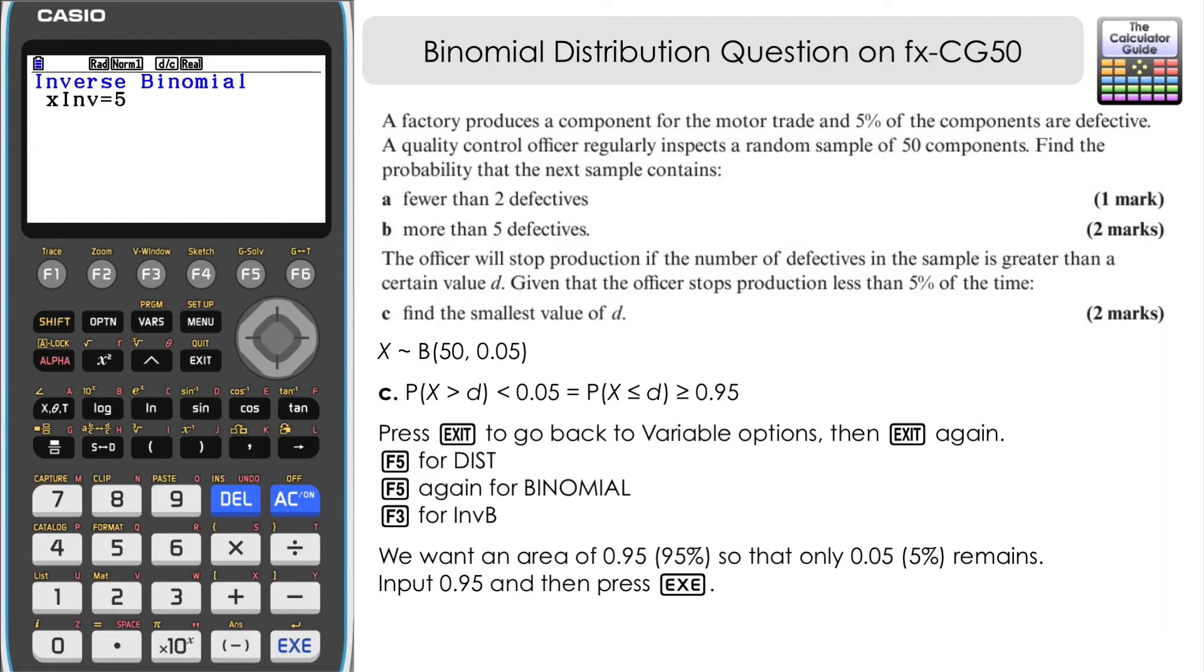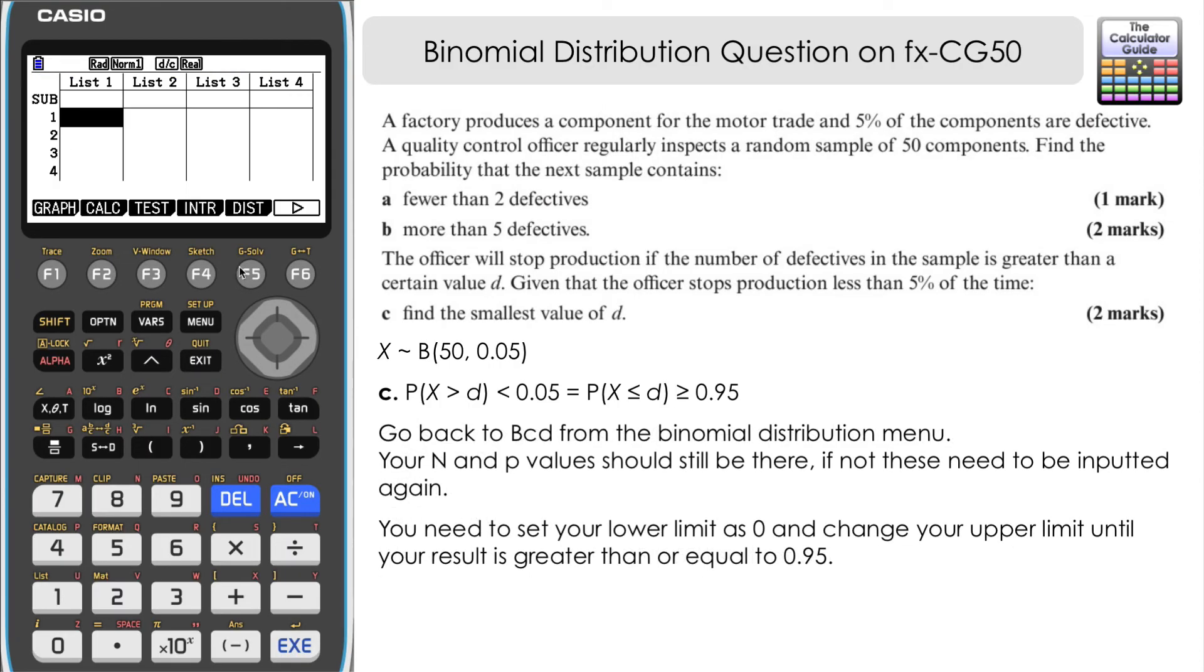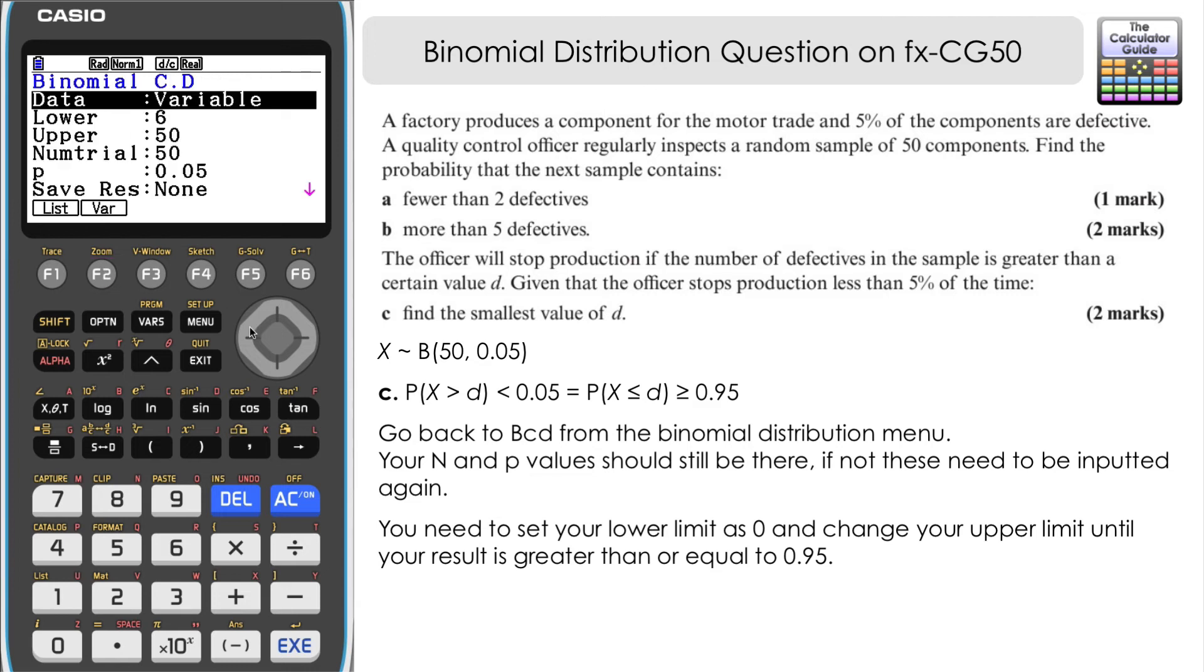Now, if you don't have an inverse binomial function, there is another way that we can do this. This is essentially a trial and improvement method. If we go back to binomial cumulative distribution, we've still got the figures here from when we did part B, we're just going to change our lower and upper limits. Our lower limit is going to be zero again.